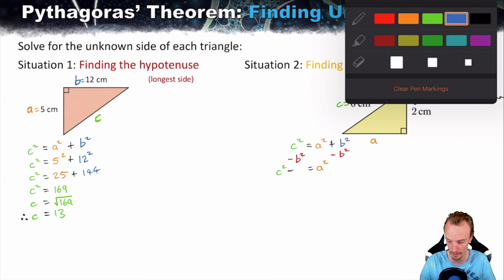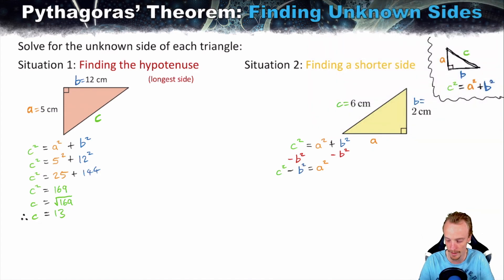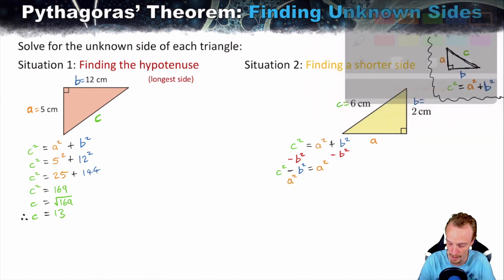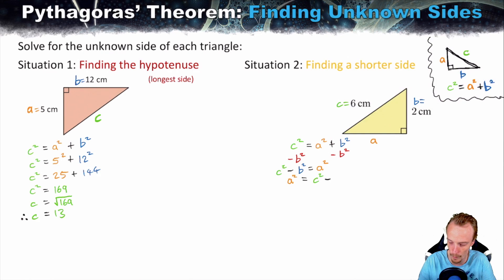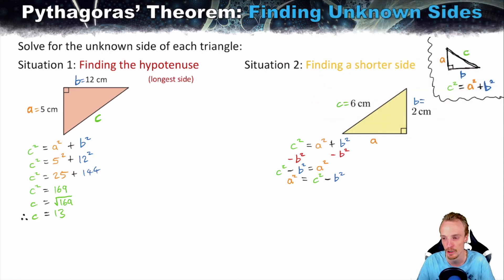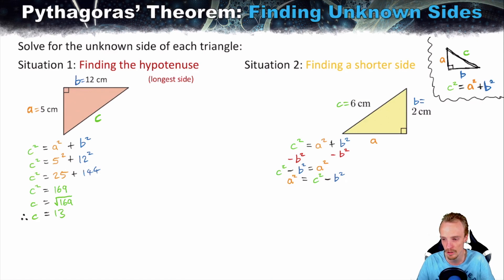If it were B you were after, you'd subtract A squared from both sides instead. I'm a big fan of knowing how to rearrange formulas because it really opens up what you can do. But if you want to skip the rearranging, you can simply remember: A squared equals C squared minus B squared. Once we have A squared isolated, we substitute the known values into the formula.